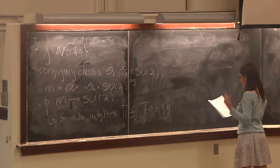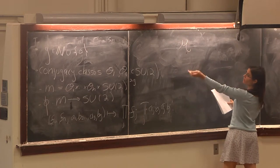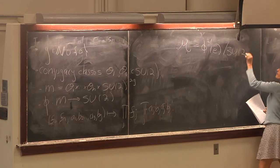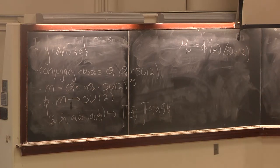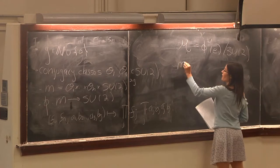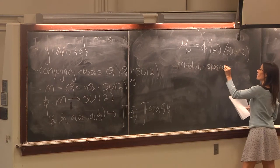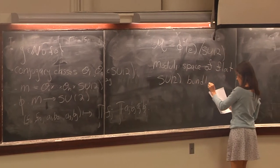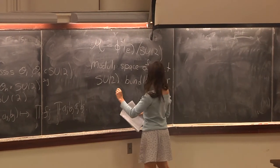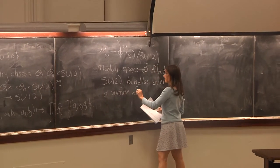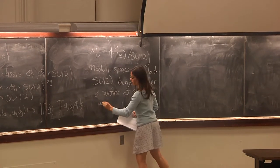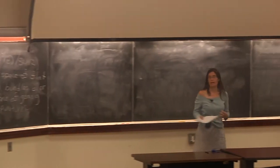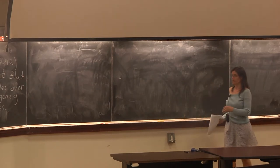Therefore, because we have these actions and this equivariance, we can define a topological space — this curly M, not the same M. I can just take the inverse image of the identity and divide out by SU(2). This turns out to be an important space: this is the moduli space of flat SU(2) bundles over a surface — a Riemann surface if you like — of genus G with N punctures.